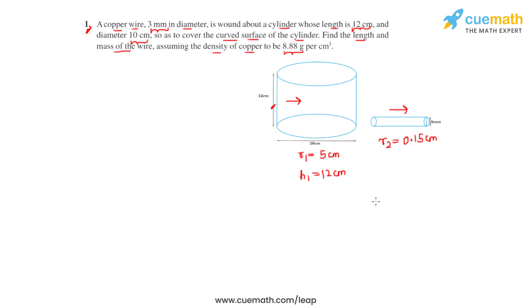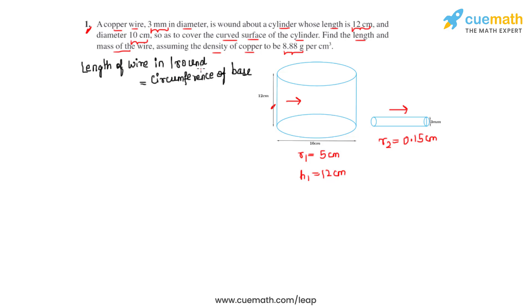It can be observed that one round of wire will cover 3 millimeters, or 0.3 centimeters, of the cylinder's height. The length of wire in one round will be equal to the circumference of the base, because one round is one circle and the circumference is calculated with the formula 2πr. Substituting r1, the answer will be 2π × 5 = 10π centimeters.